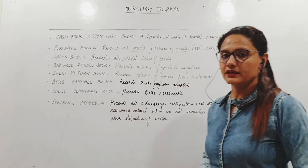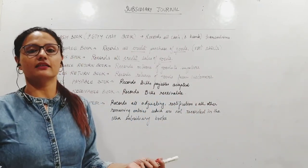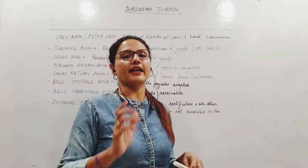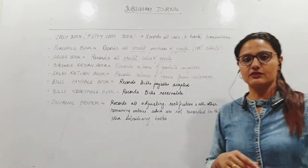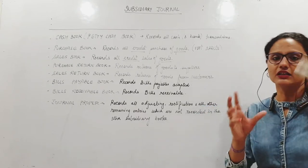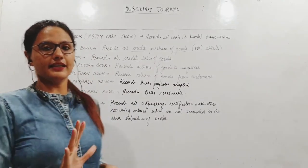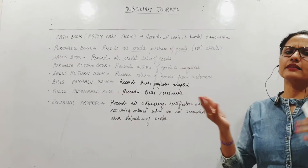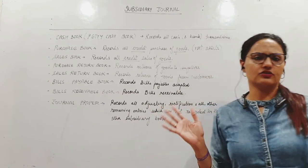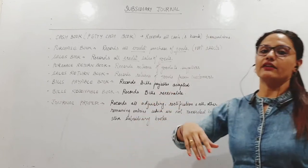Similarly, bills receivable - who will give me money? My debtor. My debtor has given me a signed bill, so that is a bill receivable for me. It's proof for me. He is going to pay me such and such amount after a specified period which is mentioned in the bill. It's an asset to me. These two books will specifically record all the bills receivable and payable transactions separately.